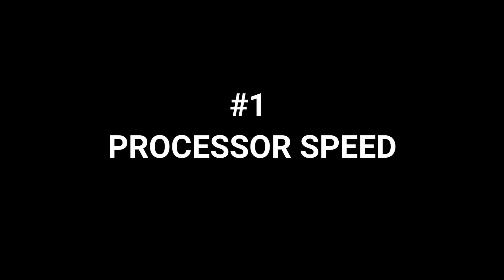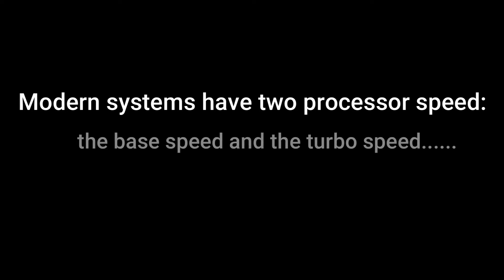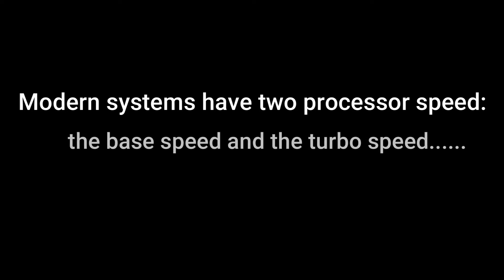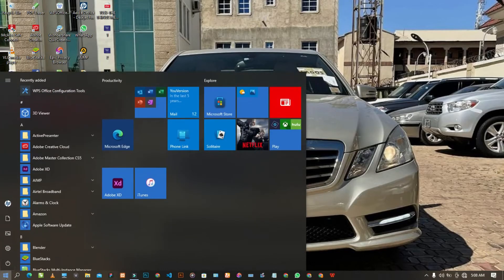The first thing I'll check is the processor speed. Modern systems have two processor speeds: the base speed and the turbo speed. The base speed is the functionality of the system when it is at normal range, while the turbo speed is when the system is overloaded with work. Let's check the processor speed of this particular system.